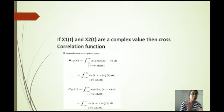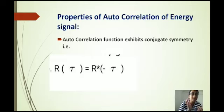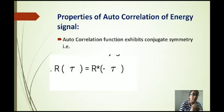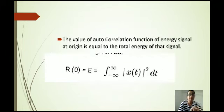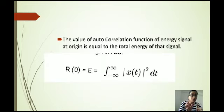Here R12 means we measure the similarity from signal one to signal two, and R21 means we measure similarity from signal two to signal one. After that we discuss the properties of autocorrelation for an energy signal. The first property is that it exhibits conjugate symmetry, that is R(tau) equals R*(minus tau).